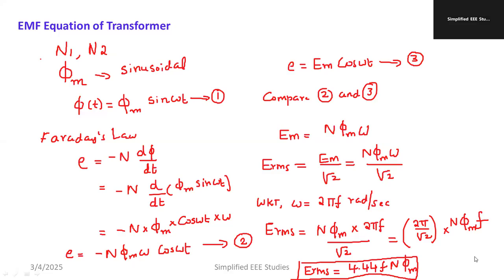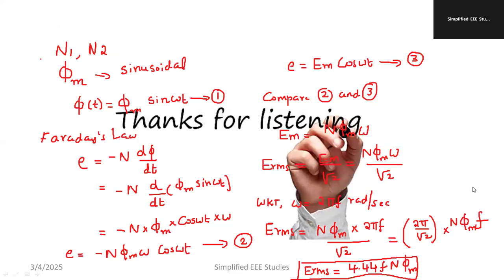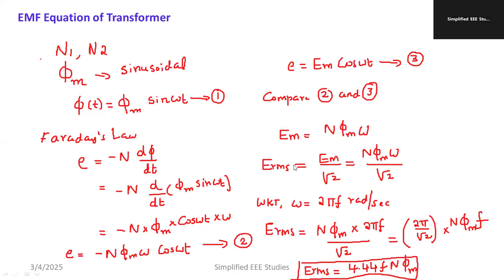Now I will write the EMF equation corresponding to primary and secondary. For primary side, I will be writing E1 equals 4.44*f*N1*phi_m. The frequency remains constant, unchanged because in transformer we are not varying the frequency. Primary number of turns is N1 and this is phi_m.